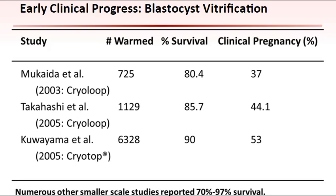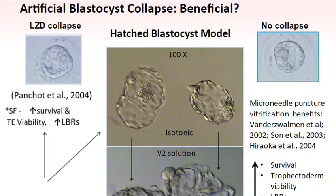Early efforts with blastocyst vitrification showed its reliability to sustain good embryo survival and viability, with reports demonstrating 70 to 97% survival. Post-thaw viability rates utilizing slow-freeze protocols were being enhanced by simply collapsing the blastocyst cavity via either laser ablation or microneedle puncturing of the trophectoderm cells prior to exposure to the cryoprotective agent. By improving the overall survival of the trophectoderm cells, embryos had an improved chance of implanting and sustaining a full-term pregnancy. Similar improvements in post-warming survival of vitrified blastocysts have been seen with different vitrification devices using ethylene glycol DMSO vitrification solutions.